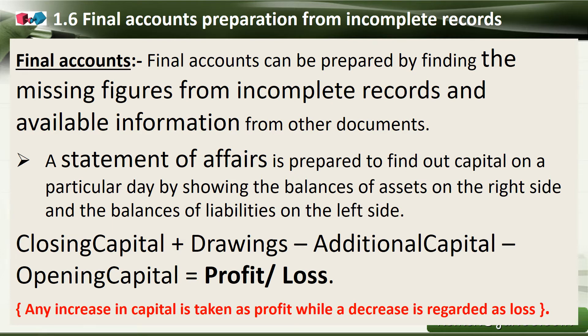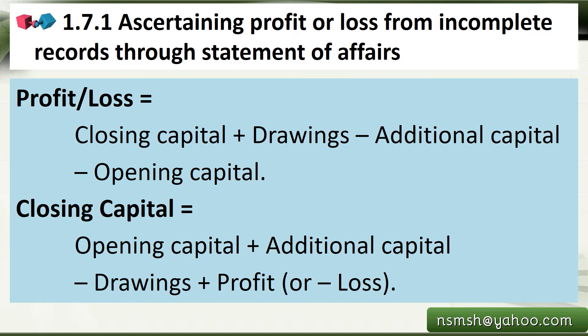Ascertaining profit or loss from incomplete records through the Statement of Affairs. The formula is: Profit or Loss = Closing Capital + Drawings − Additional Capital − Opening Capital. If the result is positive, it is profit; if negative, it is loss. Any increase in capital is taken as profit, while a decrease is regarded as loss. For closing capital: Closing Capital = Opening Capital + Additional Capital − Drawings + Profit or Loss. In exam questions, if profit or loss, opening capital, additional capital, and drawings are given, we can find the closing capital.